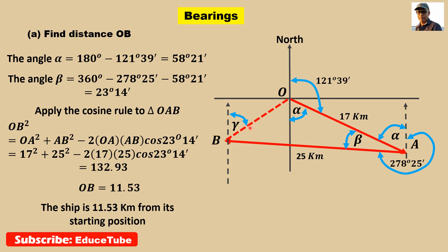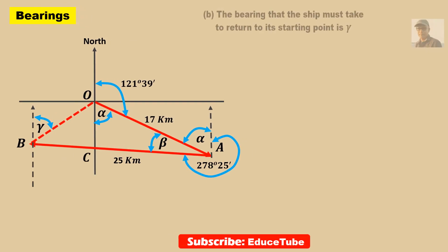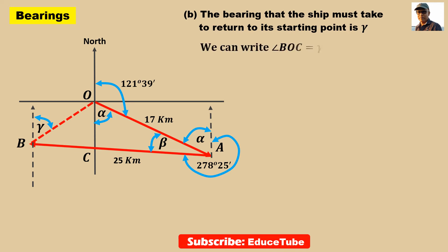Now let's find this angle gamma, which is bearing for this line. We can write this angle as gamma. Because this direction and this direction are parallel, if it is gamma, this will also be gamma. That's why angle BOC is gamma, and angle BOA is alpha plus gamma.